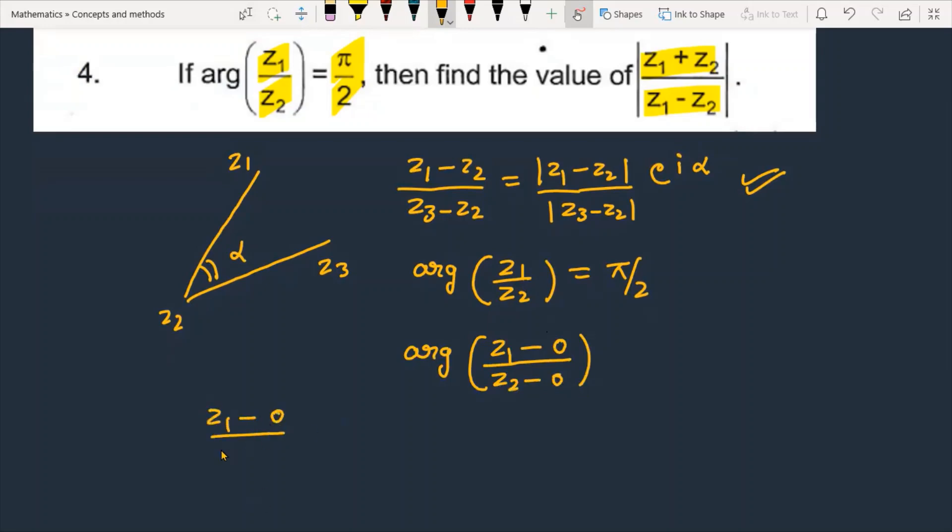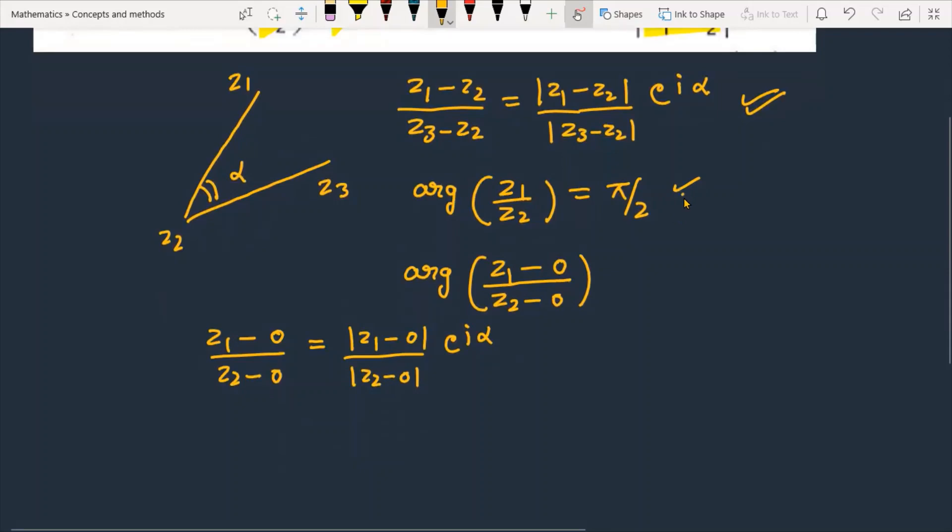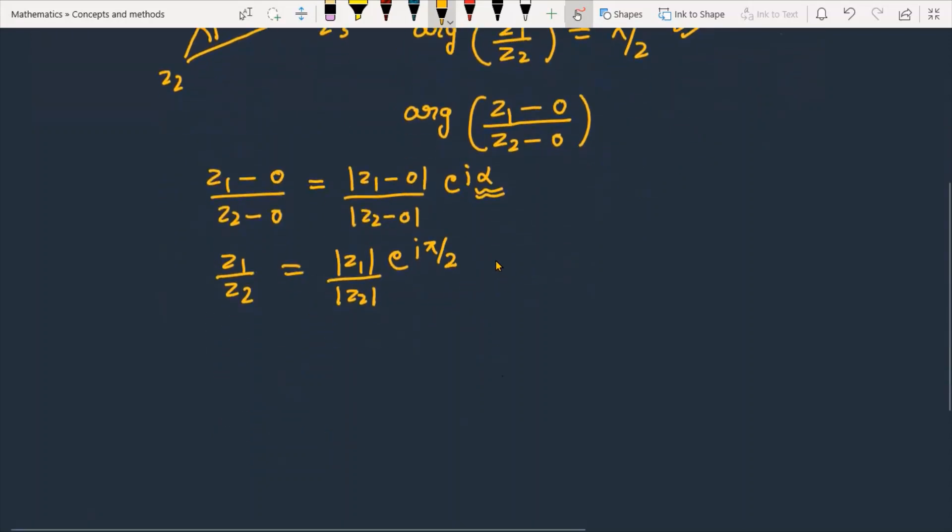This equals z1 minus 0 divided by modulus of z2 minus 0, multiplied by e raised to the power iota π by 2.